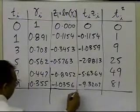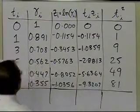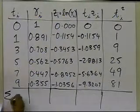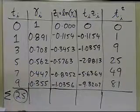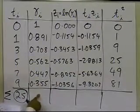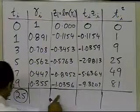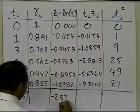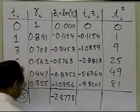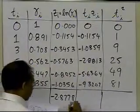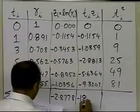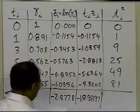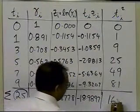So what I need for the formula, for the linear regression formula, are the summations of t-sub-i's, which is this, and that turns out to be 25. Now I don't need the summation of gamma-i's, because I'm using the transformed data. I need the summation of the z-i values, which turns out to be minus 2.8778. Summation of the t-i z-i values, all of these values added together, gives you minus 18.9897, and the summation of all the t-i squared values here gives me 165.